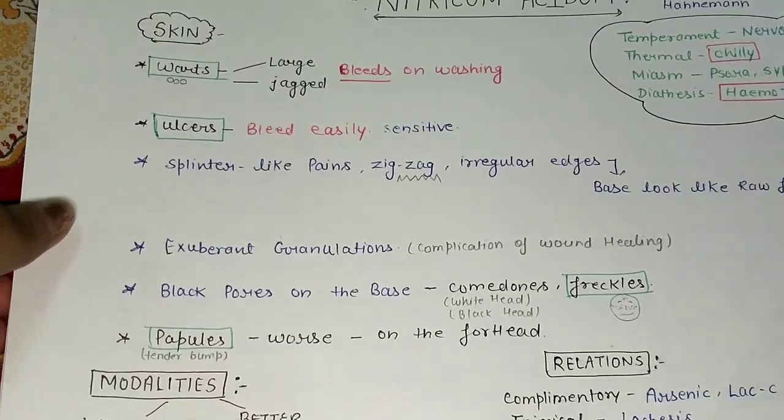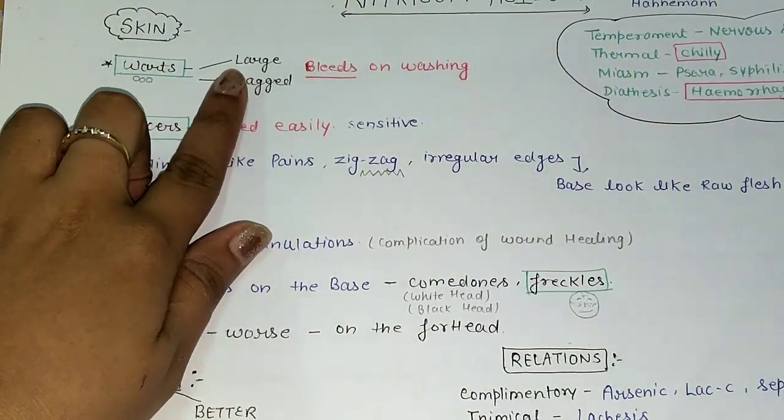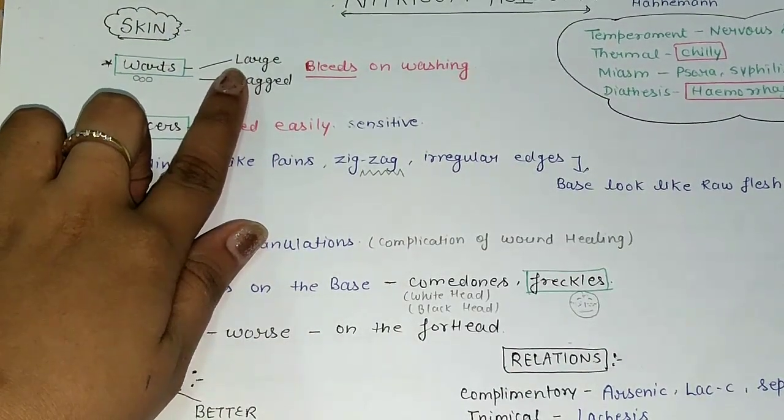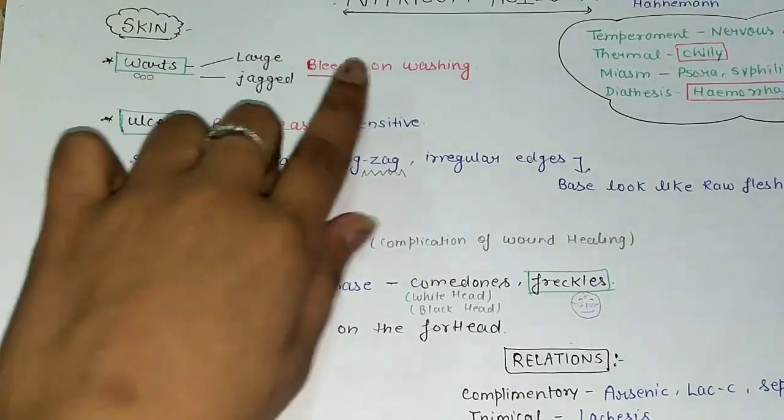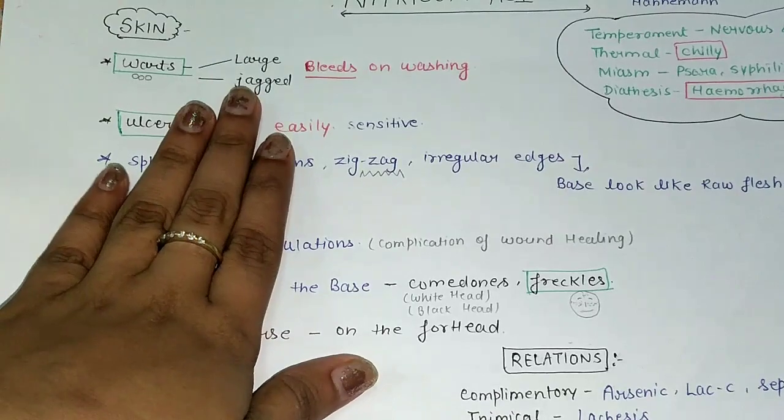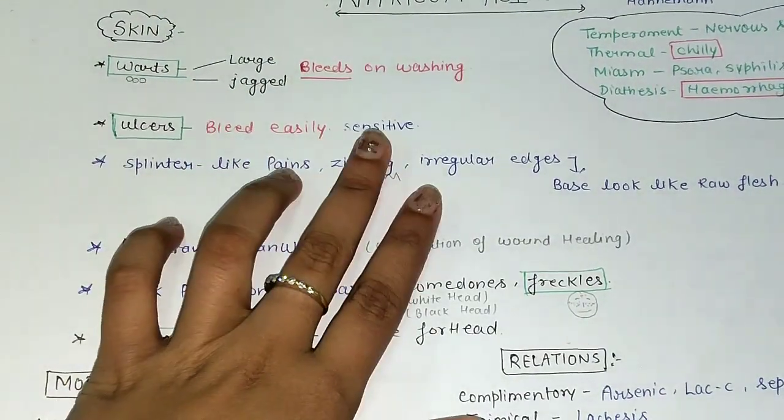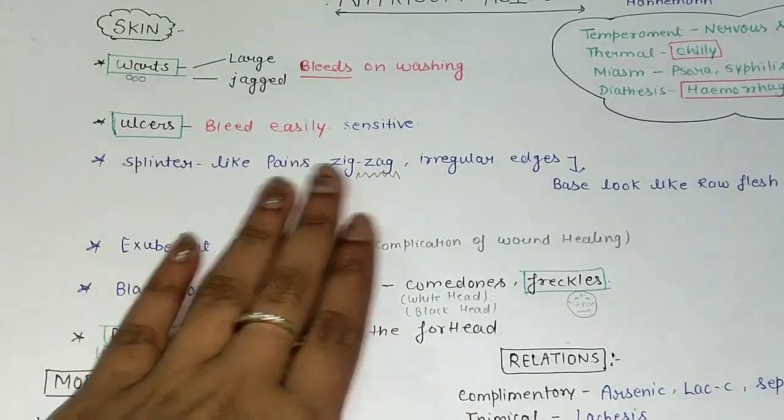Let's start the skin symptoms. Warts are large and jagged. Warts bleed on washing, large and jagged. At that time we can think about Nitric Acid. Ulcers which bleed easily and are sensitive. Splinter-like pains, zigzag irregular edges, base looks like raw flesh.